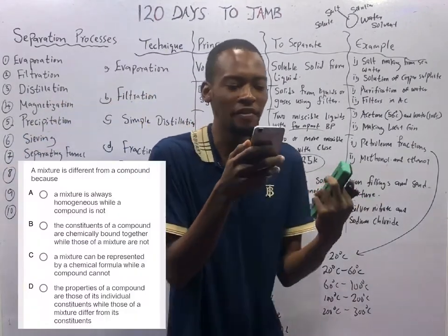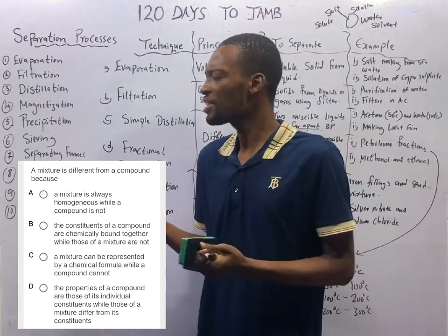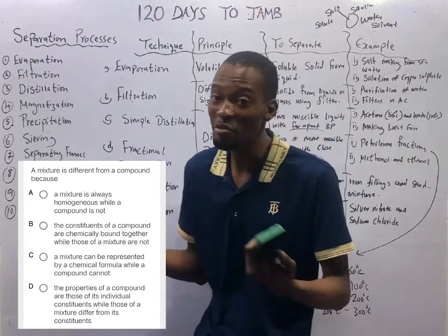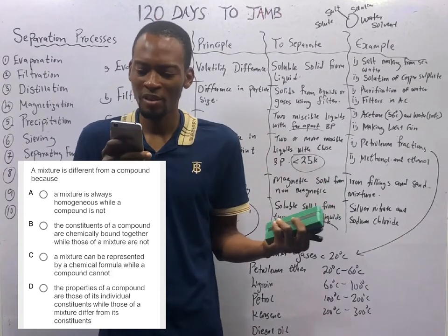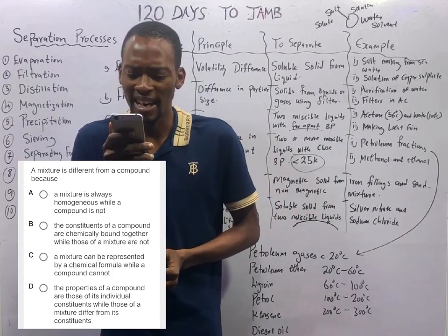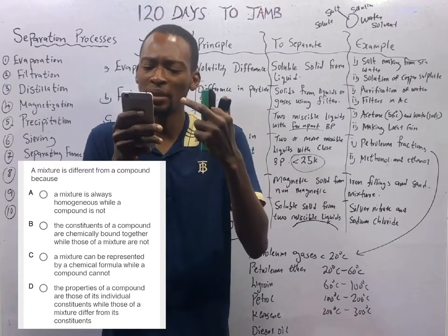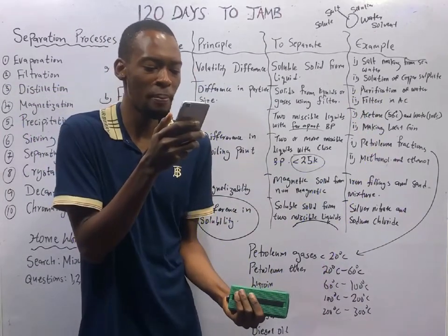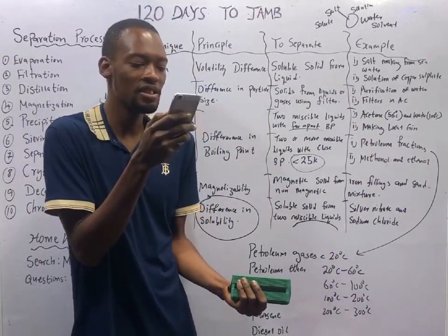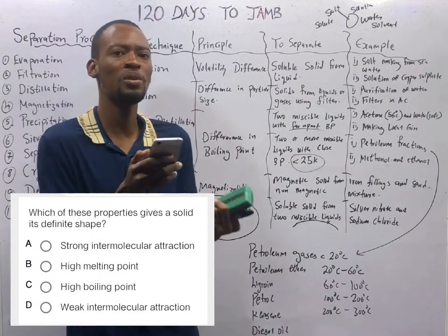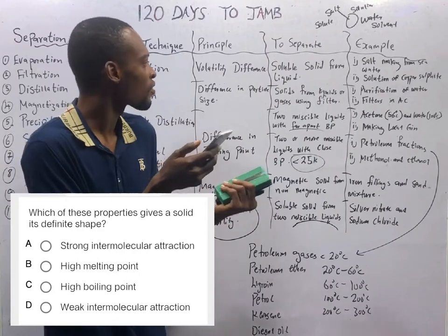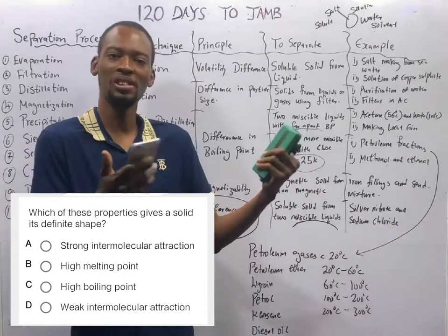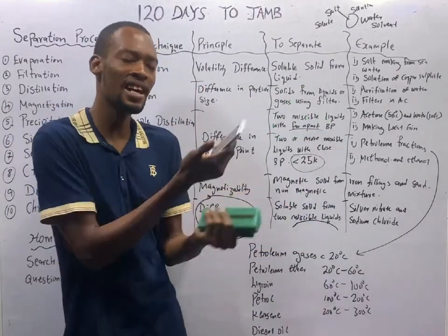A mixture is different from a compound because the constituents of a compound are chemically bound together while those of a mixture are not. Which of these properties gives a solid its definite shape? It is the strong intermolecular bonding holding them. The difference between solids, liquids, and gases is the strength of the bond — the force of attraction between the molecules. In a solid it is tight; in a gas it is modest.